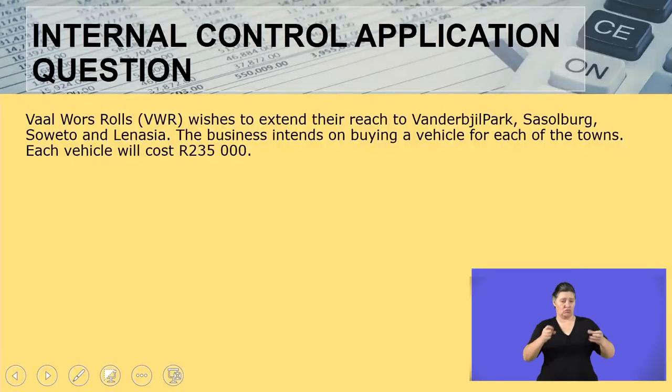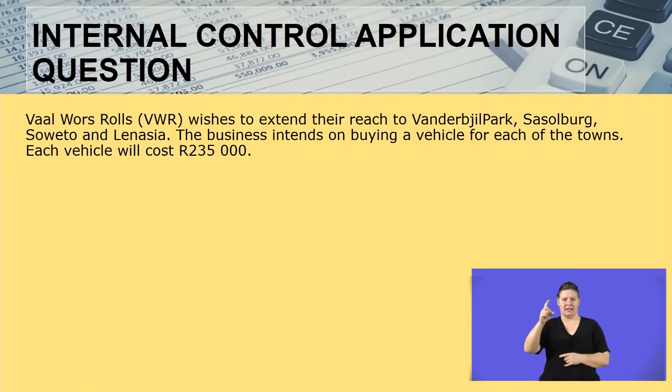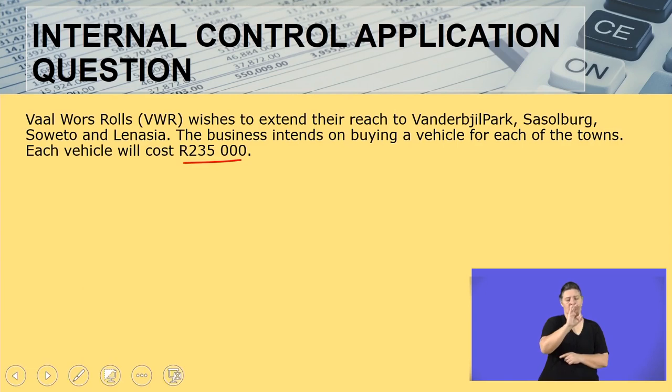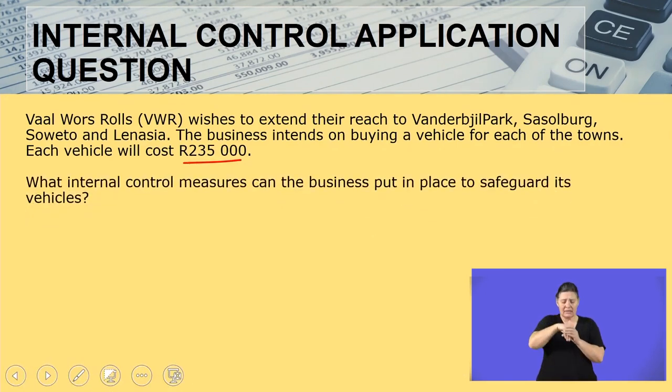That was the first question. The next question says: Val Vosros wishes to extend their reach to Vanderbilt Park, Sassoberg, Soweto, and Lineasia — towns where they want to open new businesses. The business intends on buying a vehicle for each of the towns, and each vehicle will cost $235,000. What internal control measures can the business put in place to safeguard its assets — specifically, to ensure that the vehicles are safe?